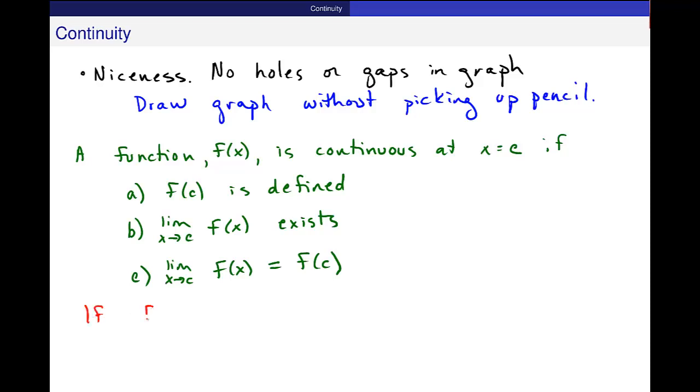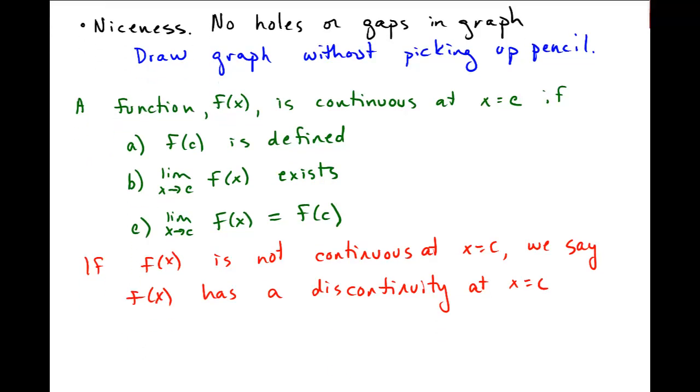But if it's not defined or it doesn't match this criteria, so if f(x) is not continuous at x equal to c, we say f(x) has a discontinuity at x equal to c, or it's discontinuous at x equal to c.